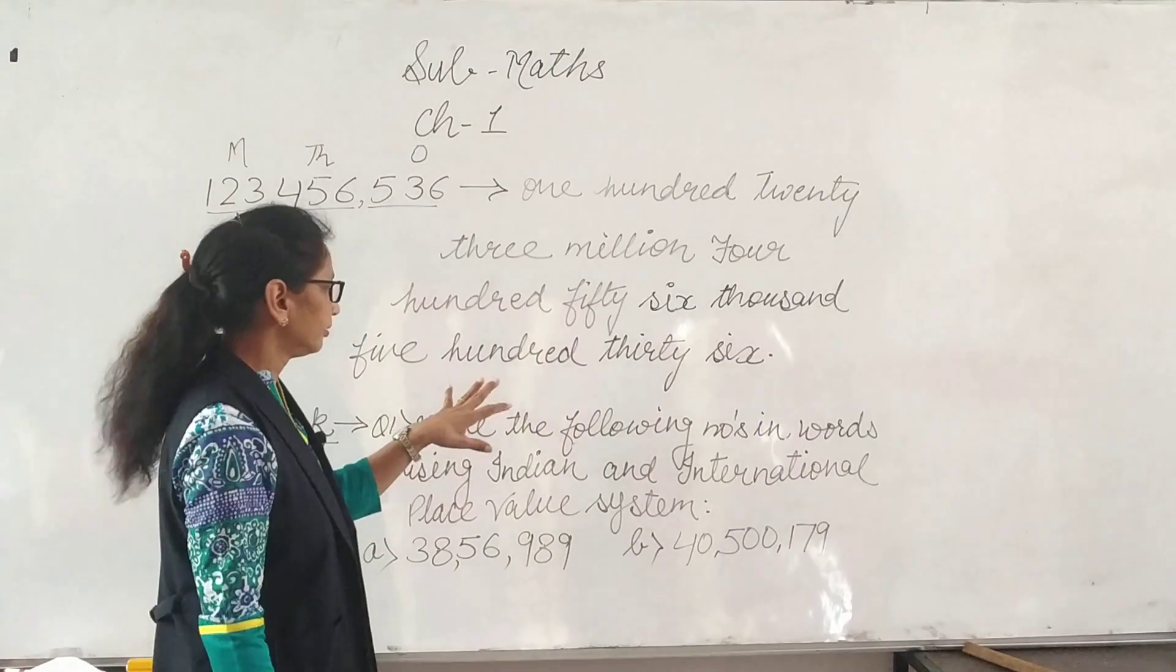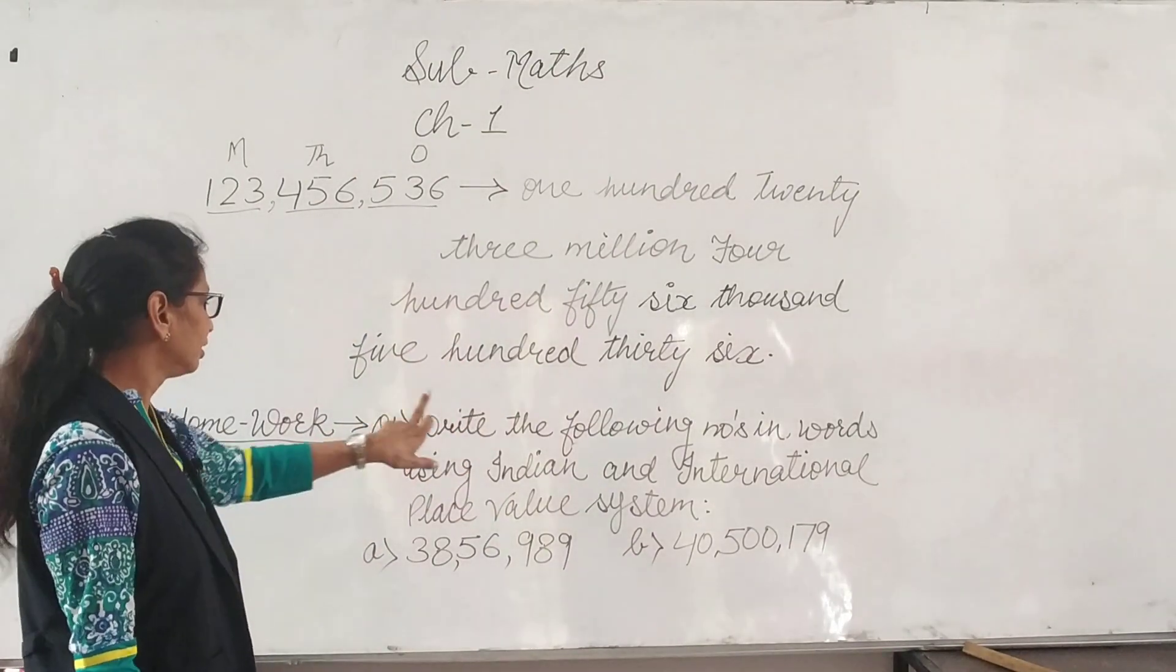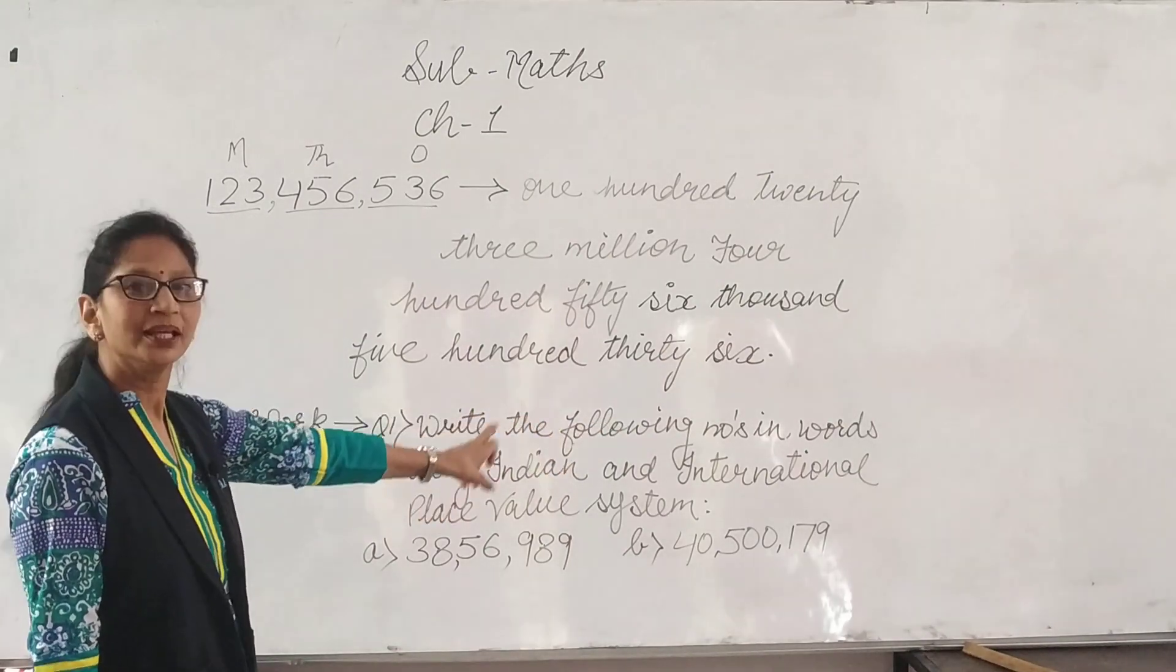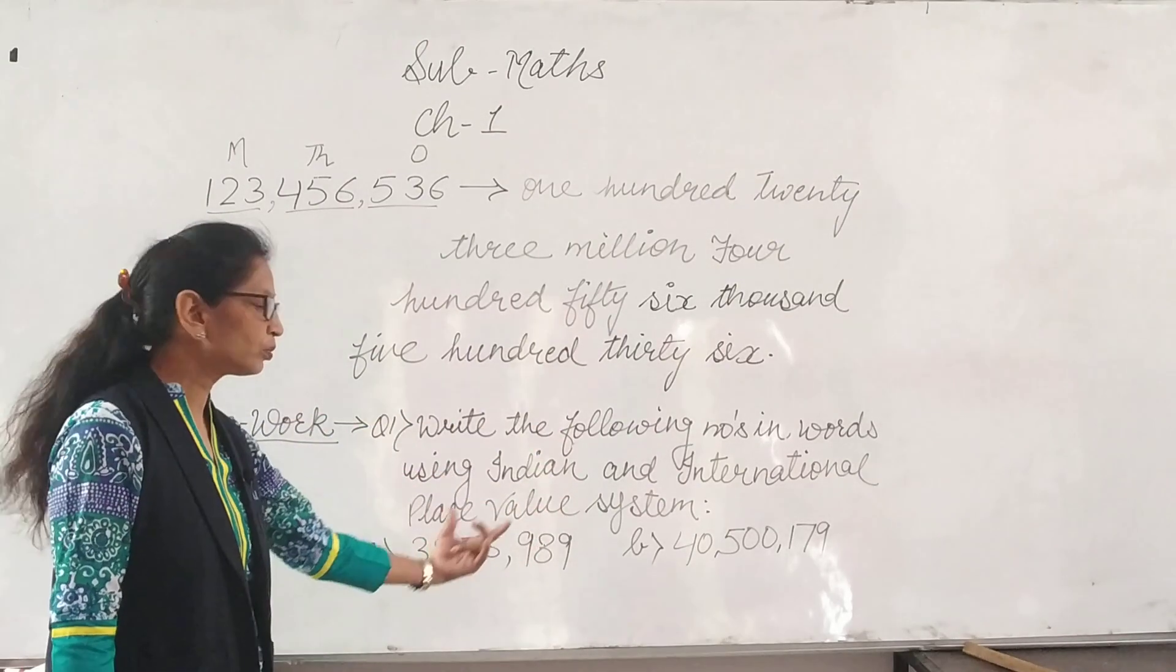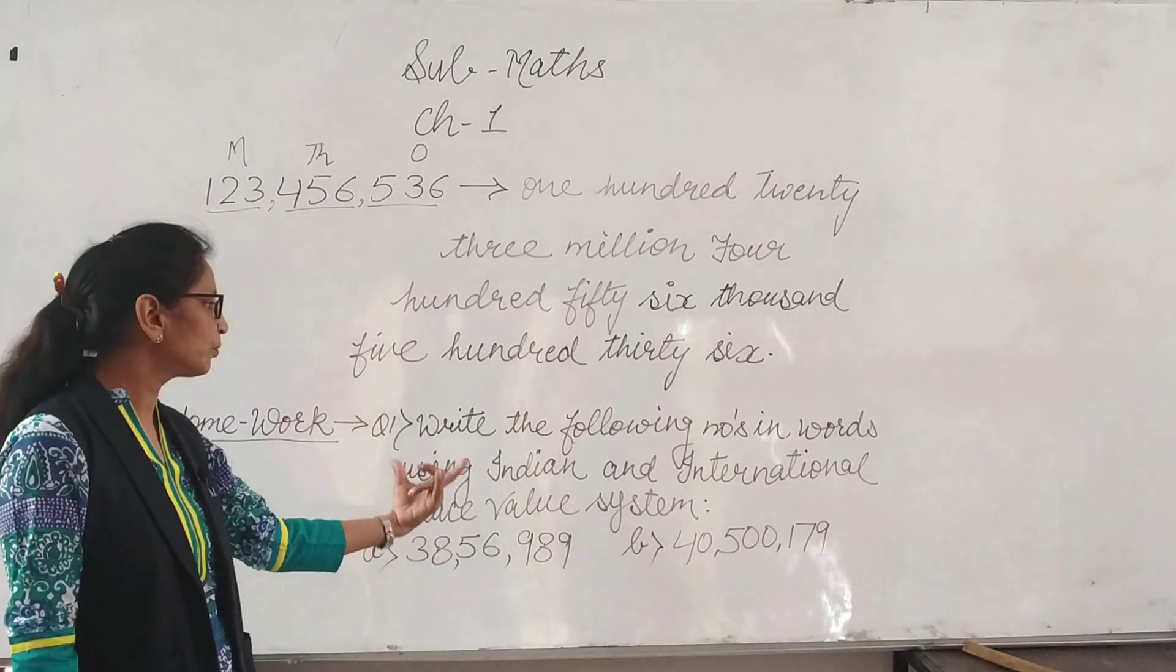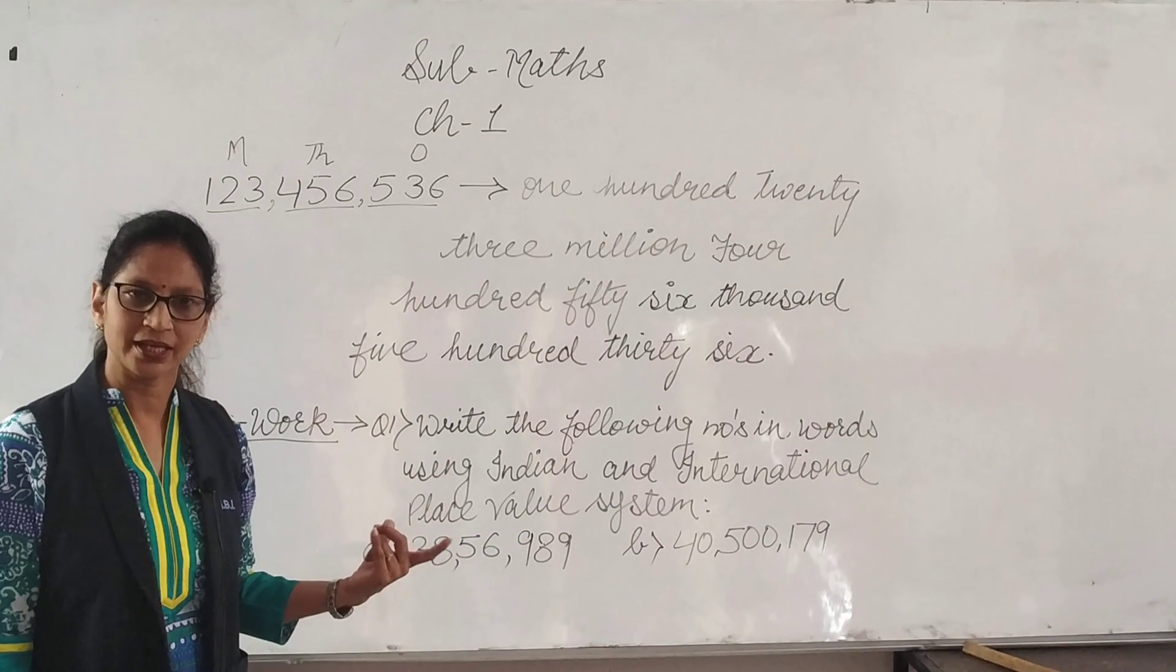Got it? Now, this is your homework. Question number one: Write the following numbers in words using Indian and international place value system. These numbers are given. These numbers are given in Indian and international system. Got it?